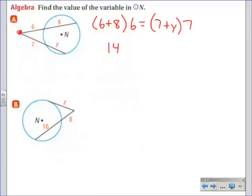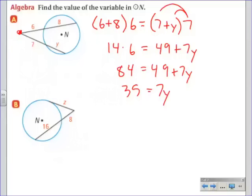So I can change this into 14 times 6 equals, I'm going to use the distributive property, which is 49 plus 7Y. 14 times 6 is 84 equals 49 plus 7Y. Take 49 away from both sides, and I end up with 35 equals 7Y. Then I'll divide both sides by 7, and you'll see that Y equals 5.